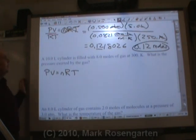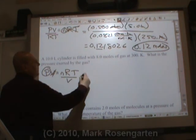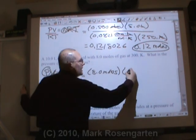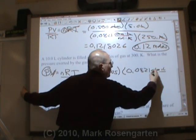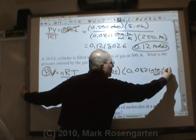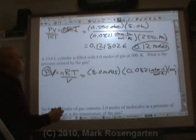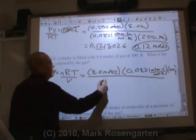A 10 liter cylinder is filled with 8 moles of gas at 300 kelvin. What is the pressure exerted by the gas? Plug in the numbers. 8.0 moles, universal gas constant 0.0821 atmospheres liter per mole kelvin. The temperature, 300 kelvin, over the volume of the gas, which is 10.0 liters.